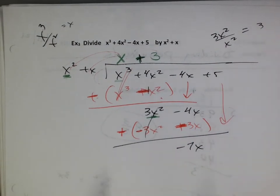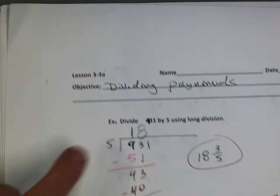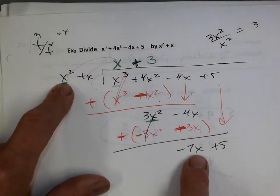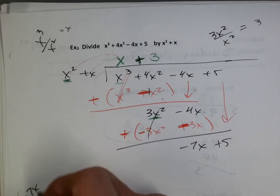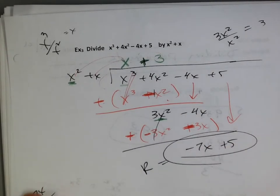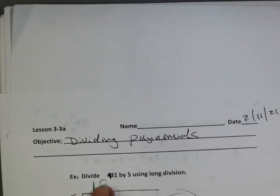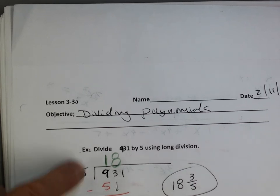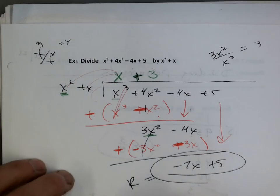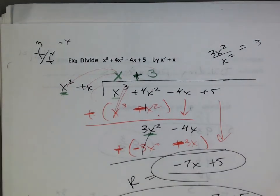I'm going to bring down the 5. Now, just like 5 doesn't go into 3 and just like x doesn't go into 3, x squared does not really go into negative 7x. If you try to divide it, negative 7x divided by x squared won't work. So you're done — this is my remainder. We don't leave it as a remainder though. We take the remainder over what we divided by. So the answer is x plus 3 plus the remainder over x squared plus x. That is long division.